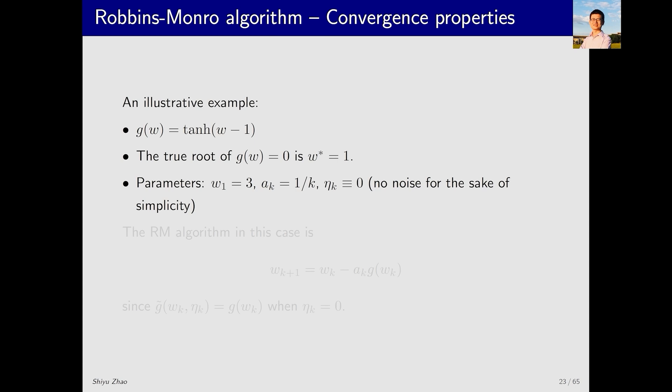Let's consider an example where the function g(w) equals this hyperbolic tangent function, and we need to find its root. We plot this function with w as the x-axis and g(w) as the y-axis. The curve of this function looks like this. Because it is a hyperbolic tangent function, it ranges from π/2 to negative π/2. The true root w* is at w equals 1. Now, we use the RM algorithm to solve this problem. The initial value of w is set to 3, so w1 equals 3, and ak equals 1/k. For the sake of simplicity, we ignore the noise in this example. Therefore, the RM algorithm now directly uses g(w) without noise.